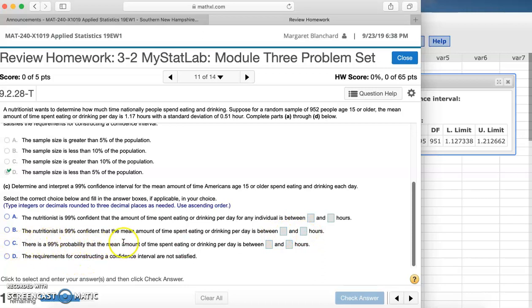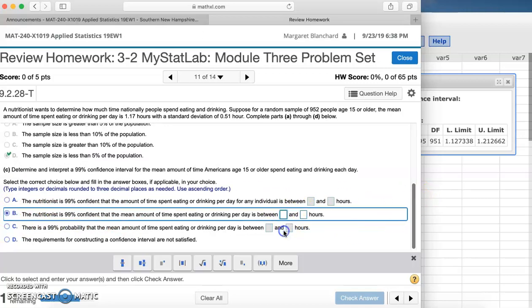There is a 99% probability that the mean amount of time spent eating or drinking per day... and then the requirements for constructing a confidence interval are not satisfied. Well, we already know that we met those. We also know that it's not necessarily that there's a 99% probability of this happening. We know that we're saying that we're 99% confident. So that's between this one or this one. And we're not looking at the amount of time, we're looking at the mean amount of time. So that tells us that answer B is our option.